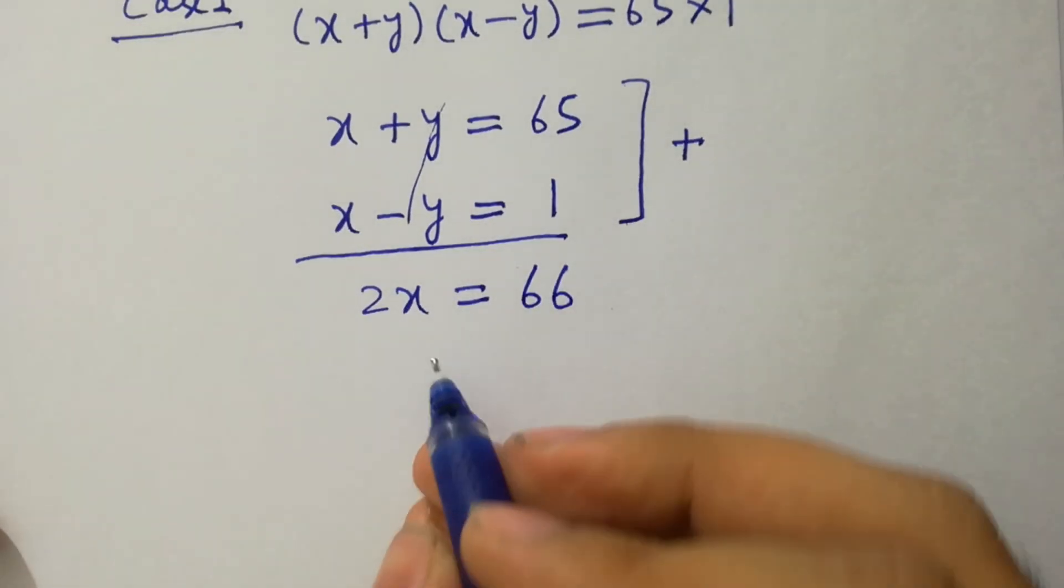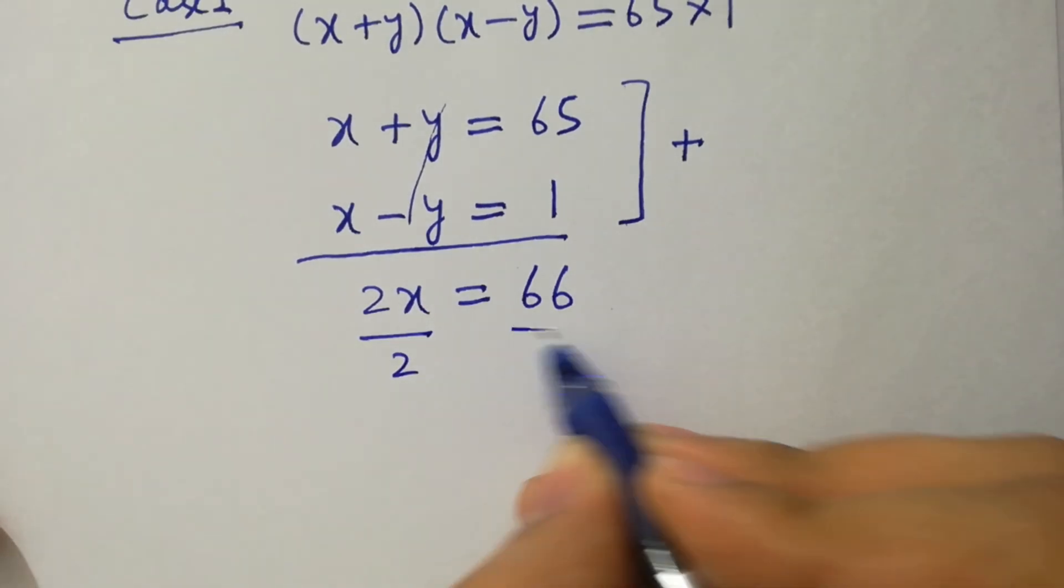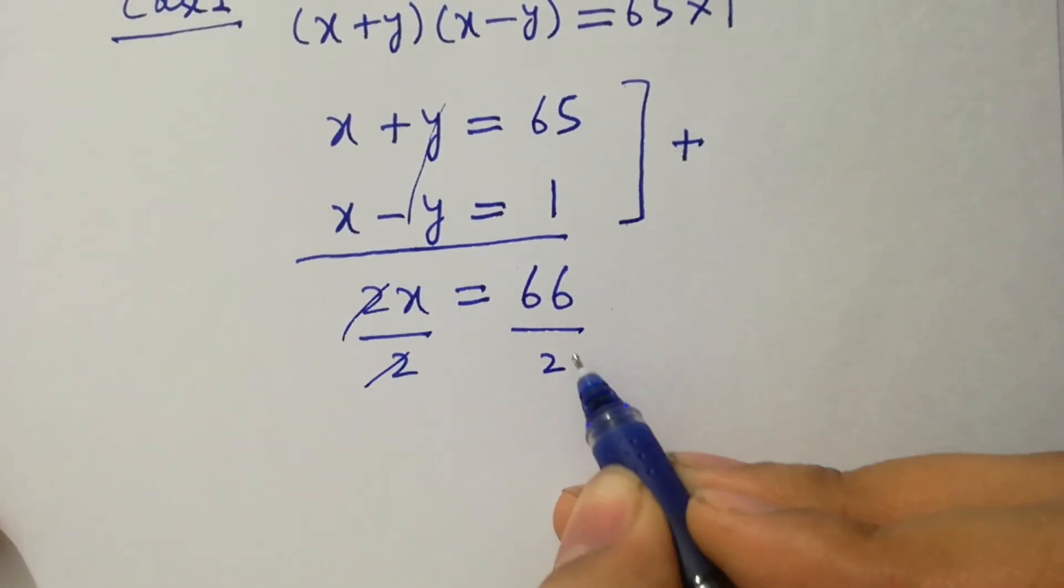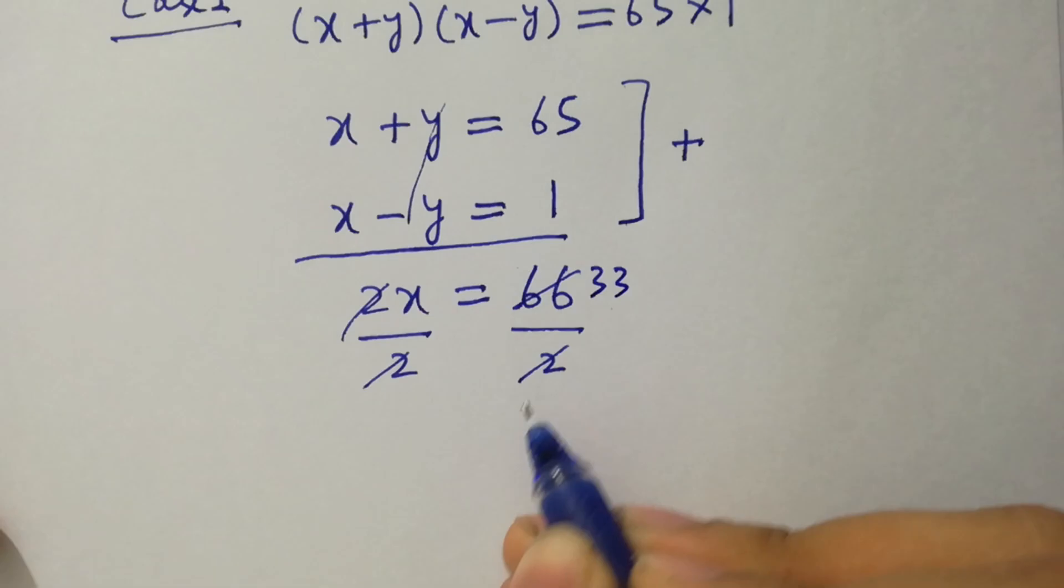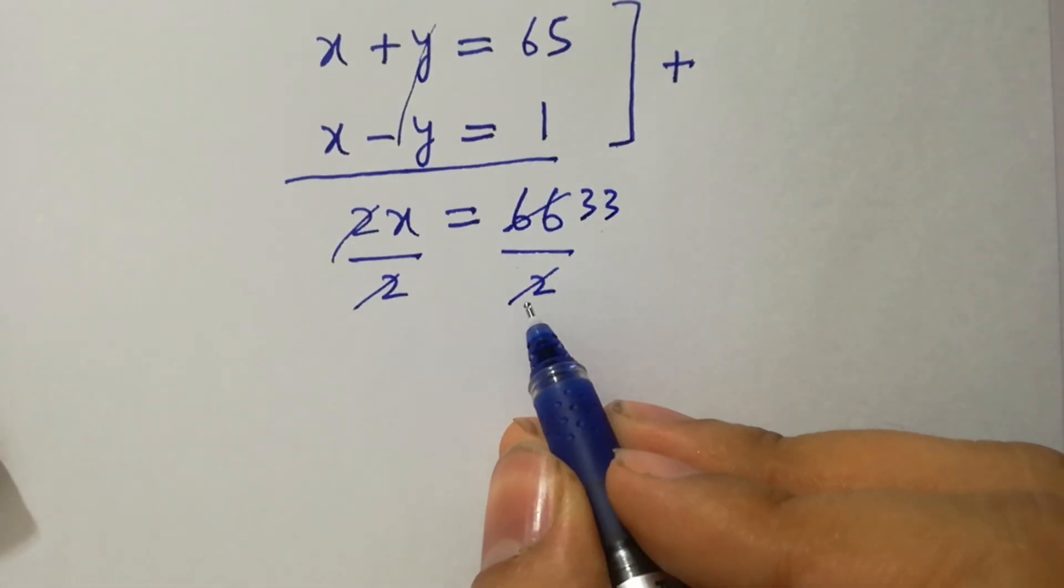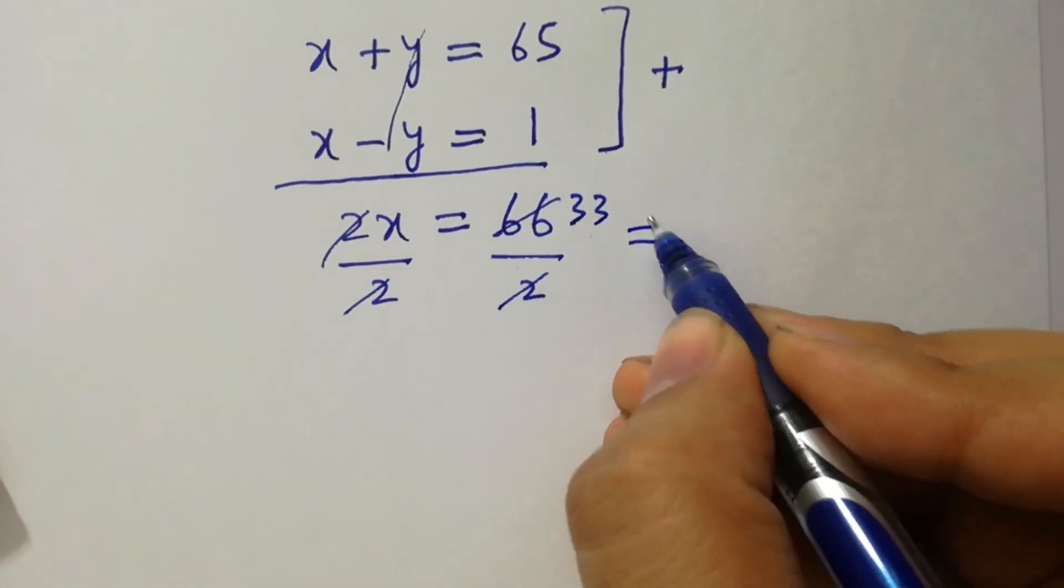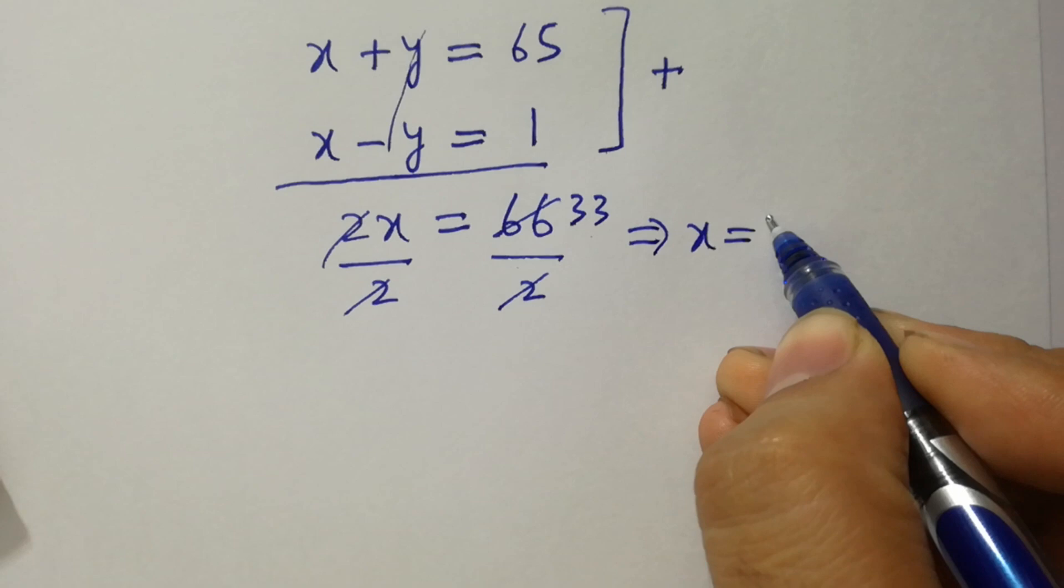To find x, divide by 2 on both sides, 2 cancels, and 2 times 33 is 66. So we have here x equal to 33.